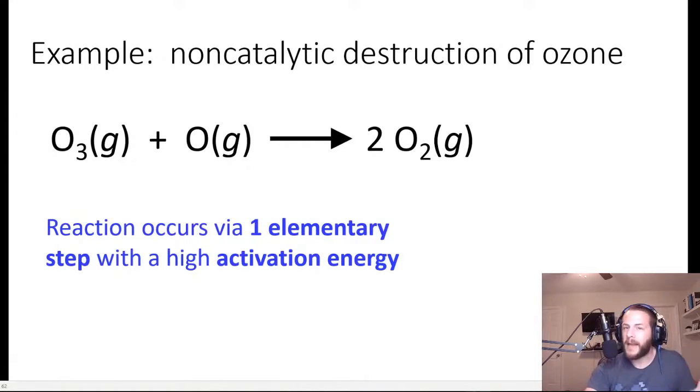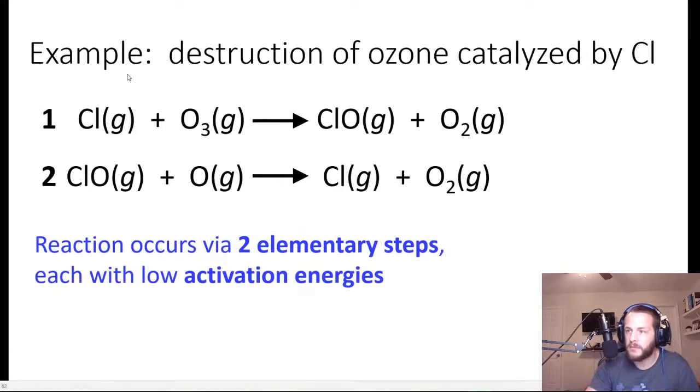Now imagine that there's a catalyst introduced to this reaction, which happens a lot because of man-made chlorofluorocarbons. I'm not trying to go on some environmental rant, but this is just an example of one reaction that's catalyzed by man-made chlorofluorocarbons. So the destruction of ozone can actually be sped up and catalyzed by chlorine atoms. They come from chlorofluorocarbons. The way that chlorine catalyzed destruction of ozone works is by a two-step process.